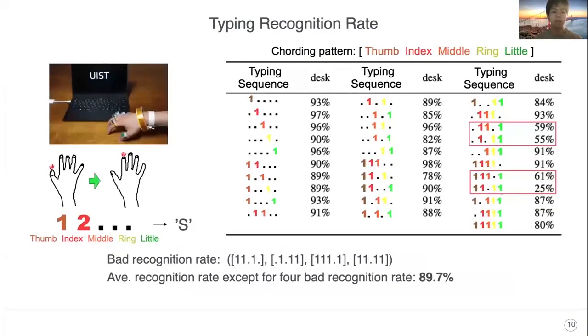This is the typing recognition rate of TelemetRing. As you can see, four typing patterns show very bad rates because it is difficult to type these patterns for the user. Based on this result, we use the patterns except these four patterns for A to Z character inputs.